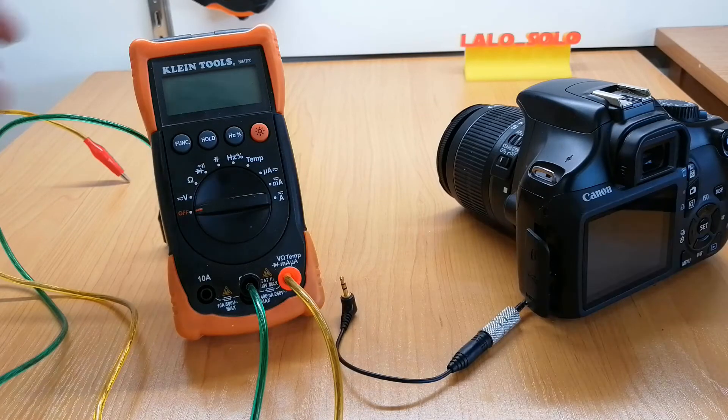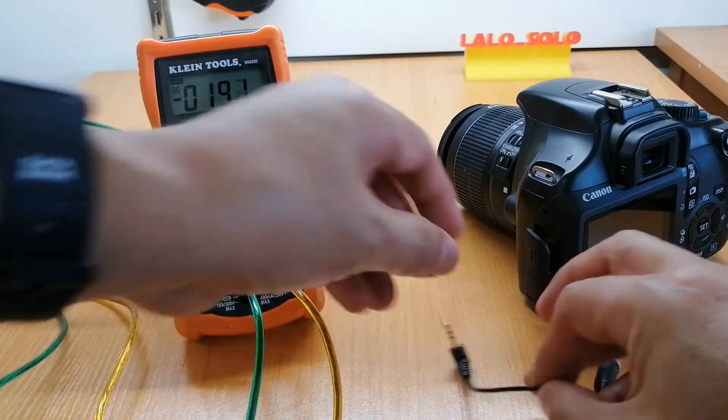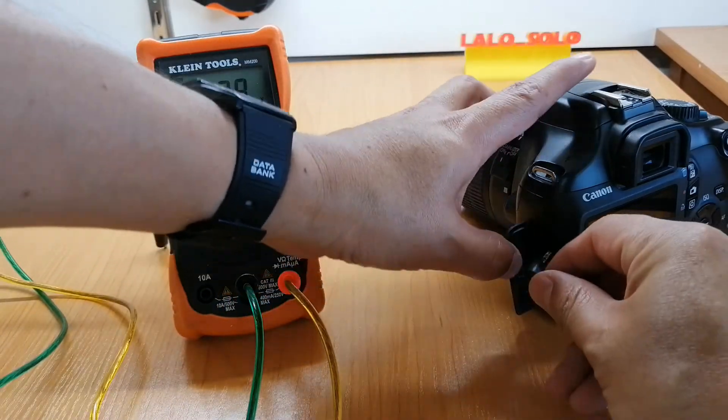First, let's understand the electrical properties of the shutter port which is a standard 2.5 millimeter jack located in one side of the camera.